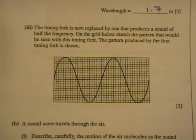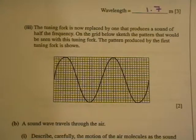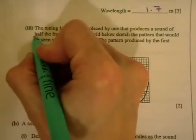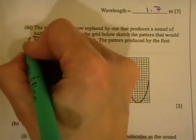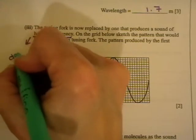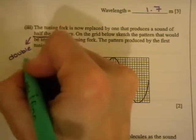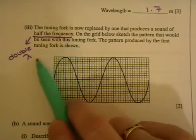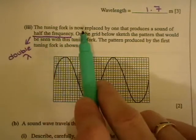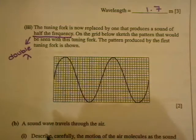The tuning fork is now replaced by one which produces a sound of half the frequency. Now, think about that carefully. Half the frequency means double the wavelength. Remember, they're kind of opposite to each other. If you increase the frequency, you have decreased your wavelength. In this case, you've decreased the frequency, so you're going to double your wavelength.